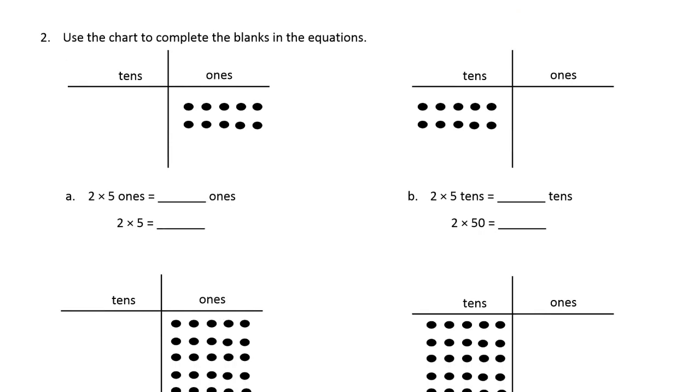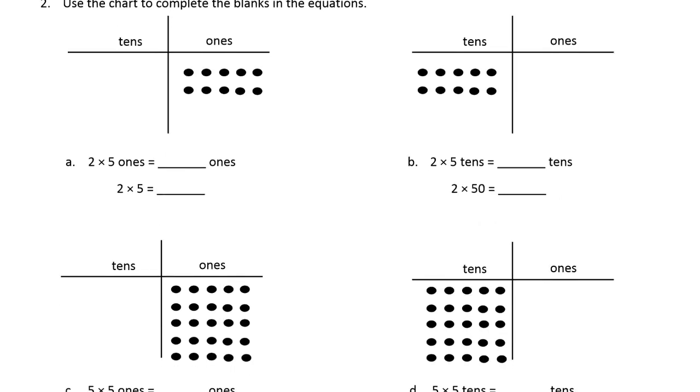Use the chart to complete the blanks in the equation. We're going to keep doing more of these. So here we have two rows of five. You can recognize ten frames, hopefully. Two rows of five ones is ten ones. Two times five is ten. Two times five tens is ten tens. Two times fifty, because each row is fifty. That's a hundred.